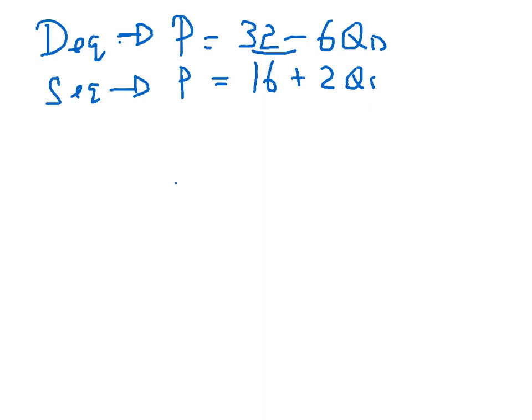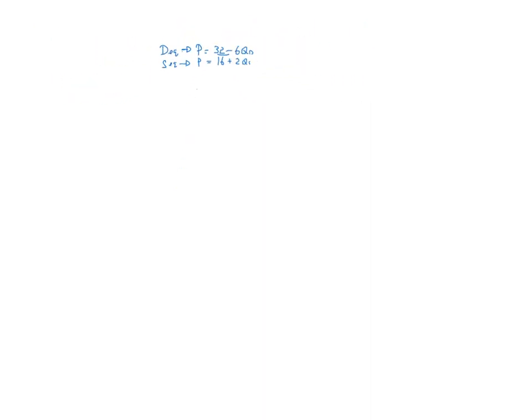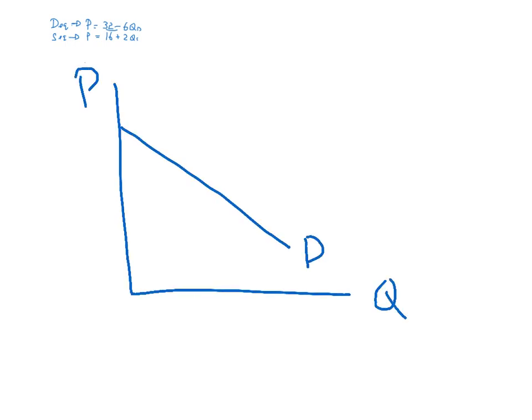So we have our demand and supply equation. Then we ask you to find equilibrium price and quantity. Essentially we are simply saying, find this. Find Q star and find P star.